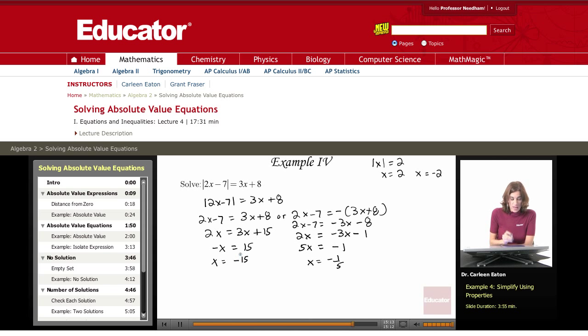Check. With absolute value equations, you always have to check your solution. So checking this back in the original equation. So 2 times negative 15 minus 7, the absolute value of that equals 3 times negative 15 plus 8.